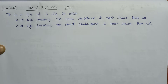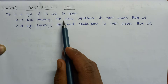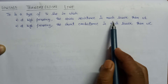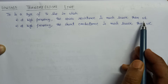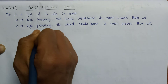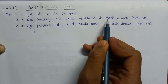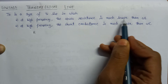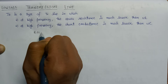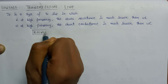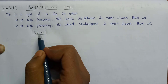Welcome all. In this lecture we are going to learn about low loss transmission line. It is a type of transmission line in which at higher frequency the series resistance is much lesser than ωL. Since the series resistance is denoted by R, the first condition is R << ωL. This is the first condition of low loss transmission line.